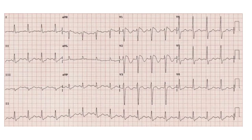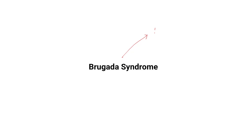In this video, we will be discussing some of the ECGs in some syndromes. We will start with the Brugada syndrome. Brugada syndrome is a sodium channelopathy that can cause sudden cardiac death because of ventricular arrhythmias — ventricular tachycardia and ventricular fibrillation — that these patients are predisposed to.